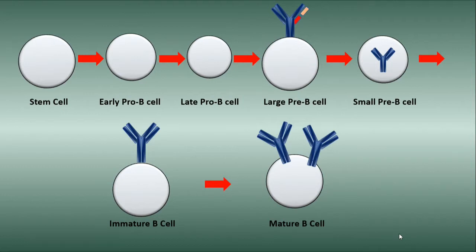The stages that a B cell goes through as it attempts to arrange an antibody are stem cell, early pro-B cell, late pro-B cell, large pre-B cell, small pre-B cell, immature B cell, and mature B cell. The heavy chain of the antibody is rearranged before light chain rearrangement begins.